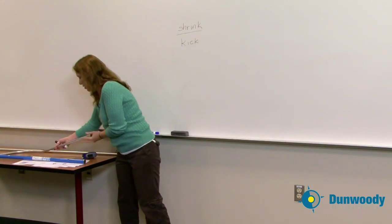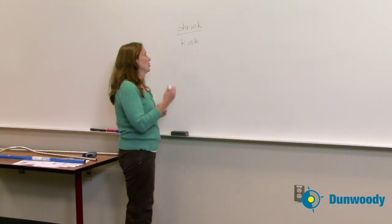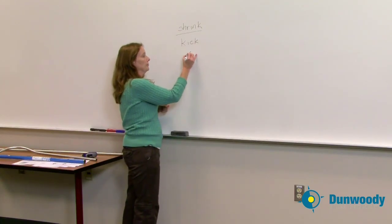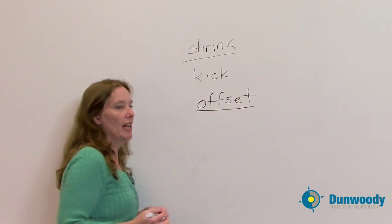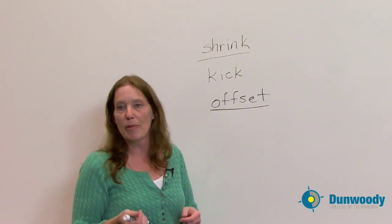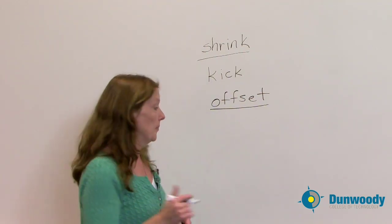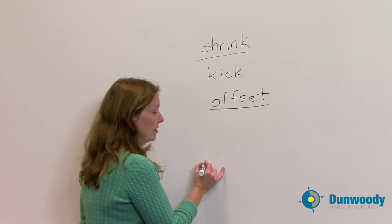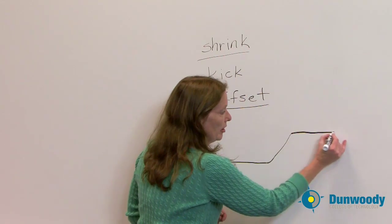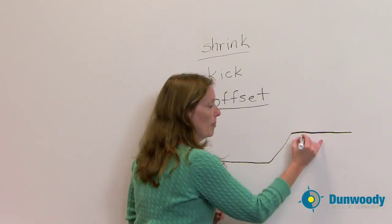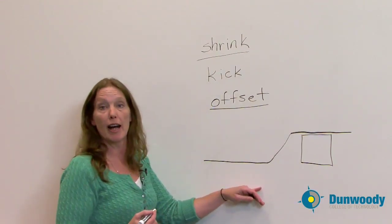So kick is one of the methods we use, or one of the types of bends we use. Another type of bend we use is called an offset. An offset is basically two identical bends changing either the direction or the height of my conduit. What an offset is - I can either take a 30 degree bend going up here, another 30 degree bend here, to go past or over an obstruction. So this is what I would consider an offset.